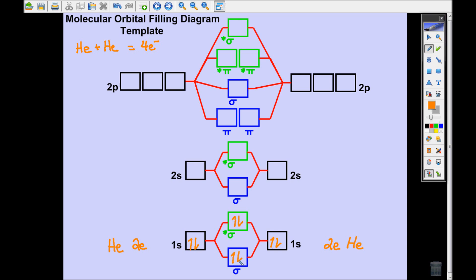Now notice here, when you get done with these, look at the molecular orbitals. You have a sigma bonding orbital that's full and a sigma antibonding orbital that is full.